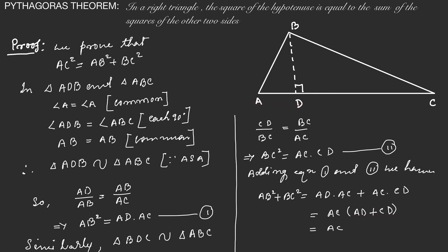Therefore, we write AC times AC, which is equal to AC square. So the left-hand side gives AB square plus BC square equals AC square. This is our proof of Pythagoras' theorem. Thank you.